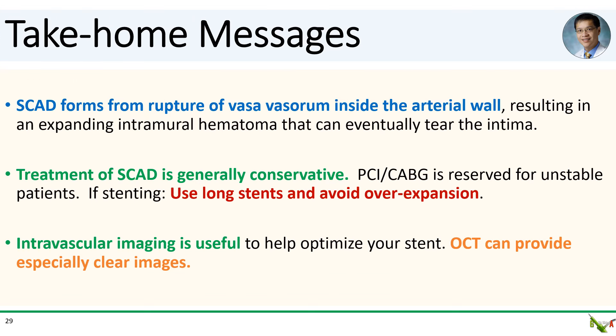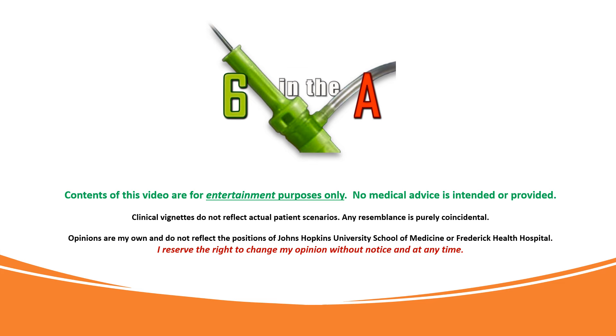Take-home messages: We went over a possible mechanism for SCAD formation, which starts with spontaneous rupture of blood vessels inside the arterial wall, causing bleeding and an expanding hematoma that can eventually tear the intima. Treatment for SCAD is generally conservative, but not always — as we saw in this case, revascularization is sometimes needed for unstable patients and STEMI patients, but do PCI carefully. Stenting dissected vessels is not the same as stenting normal vessels: use long stents and avoid overexpansion. Intravascular imaging can be very useful to help optimize your stent, and OCT can provide especially clear images.